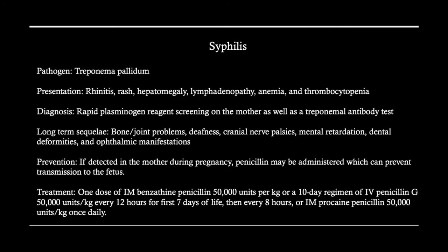The O of TORCH includes other disease states, the first being syphilis — a sexually transmitted disease that may present with rhinitis, rash, and hepatomegaly, among other conditions. Transmission can occur from mother to fetus. Detection uses a rapid plasminogen reagent screening on the mother as well as an antibody test. Long-term concerns include bone and joint problems, deafness, cranial nerve palsies, deformities, and visual acuity issues. If detected in the mother during pregnancy, penicillin can be administered to prevent transmission. If a child becomes infected, treatment is intramuscular benzathine penicillin or intravenous penicillin.